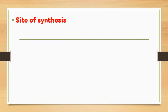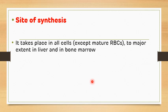Before proceeding to the main pathway, let's see the site of heme synthesis. Heme is synthesized in the majority of cells in the body except mature erythrocytes or mature RBCs, but the major sites of heme synthesis are the liver and the bone marrow.